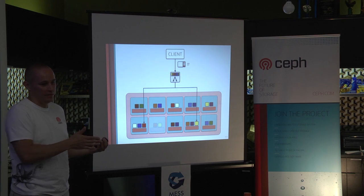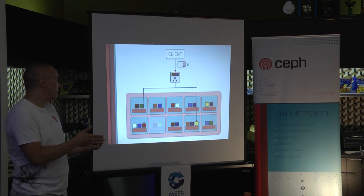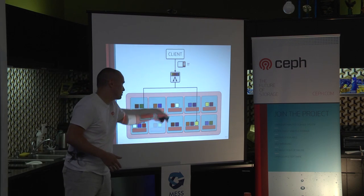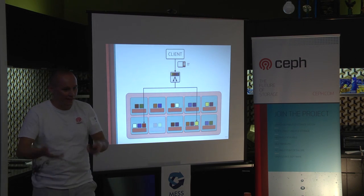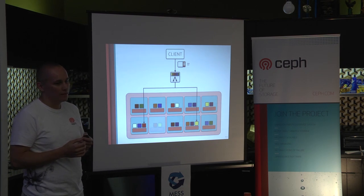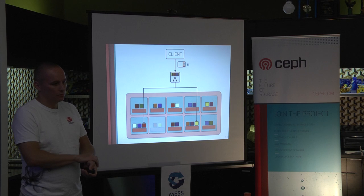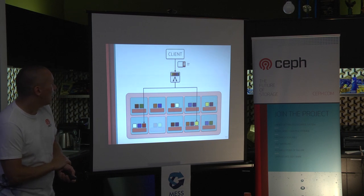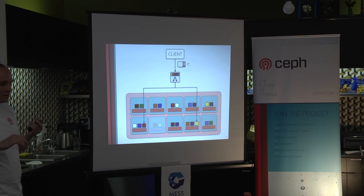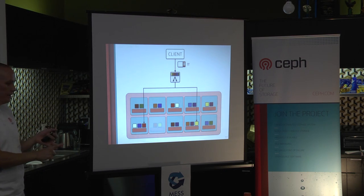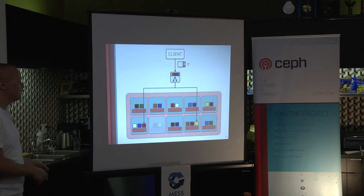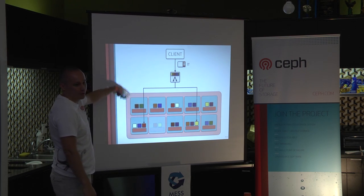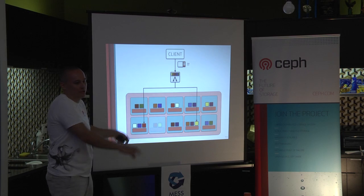If one machine goes down, we've lost one copy of a replica. We find a new location based on the CRUSH algorithm and copy the data there. As the client knows about the updated state of the cluster — the new health information — it automatically knows where to go for the data. There is no lookup table, just cluster health and cluster shape. Failure detection is also a gossip protocol — the nodes detect each other's failures and the information bubbles out of the cluster. Ceph has no single point of failure and no bottlenecks in the design.